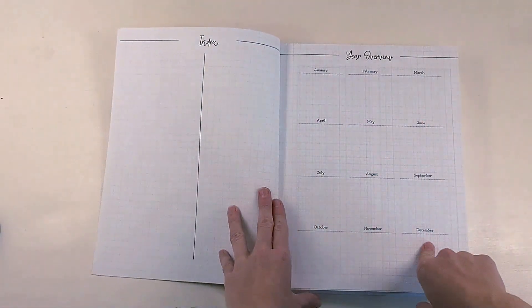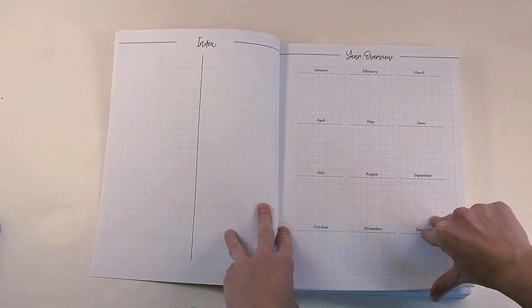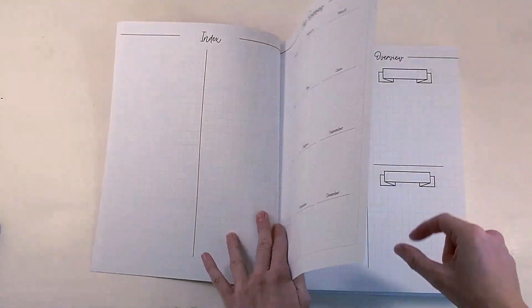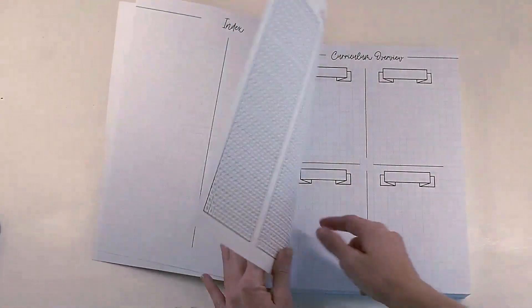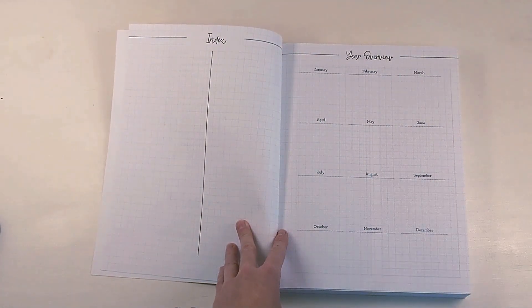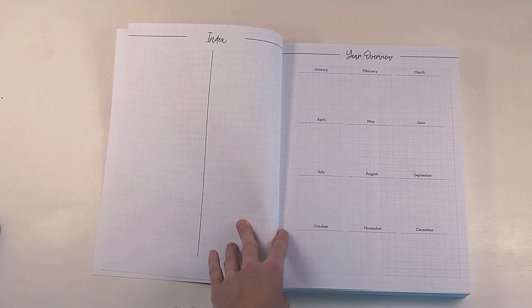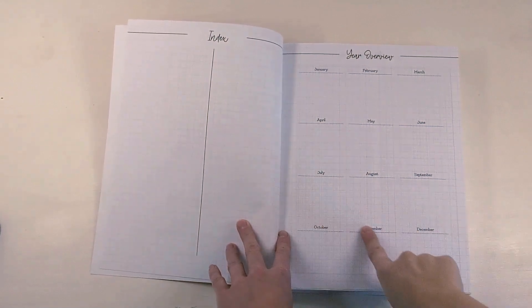Then we come to a year overview, which is really nice. There is a little bit of a see-through to the back of this page. I'm not sure if the camera is picking this up, but yeah, it's a little bit distracting.